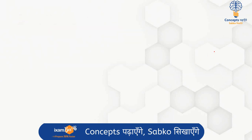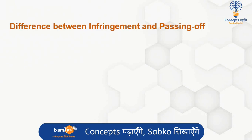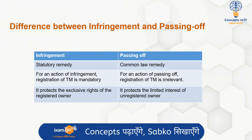The only difference between infringement and passing off: under infringement the trademark is registered — infringement action is against registered trademarks, and passing off action is against unregistered trademarks. Infringement is a statutory remedy, directly mentioned in the Act under Section 29. Passing off is a common law remedy. For infringement, registration of trademark is mandatory — that is the distinguishing feature. Passing off ke liye agar trademark registered nahi bhi hai, toh bhi aap action initiate kar sakte hain. Infringement gives exclusive protection to the rights of a registered owner, whereas passing off gives protection of limited interests of the unregistered owner.